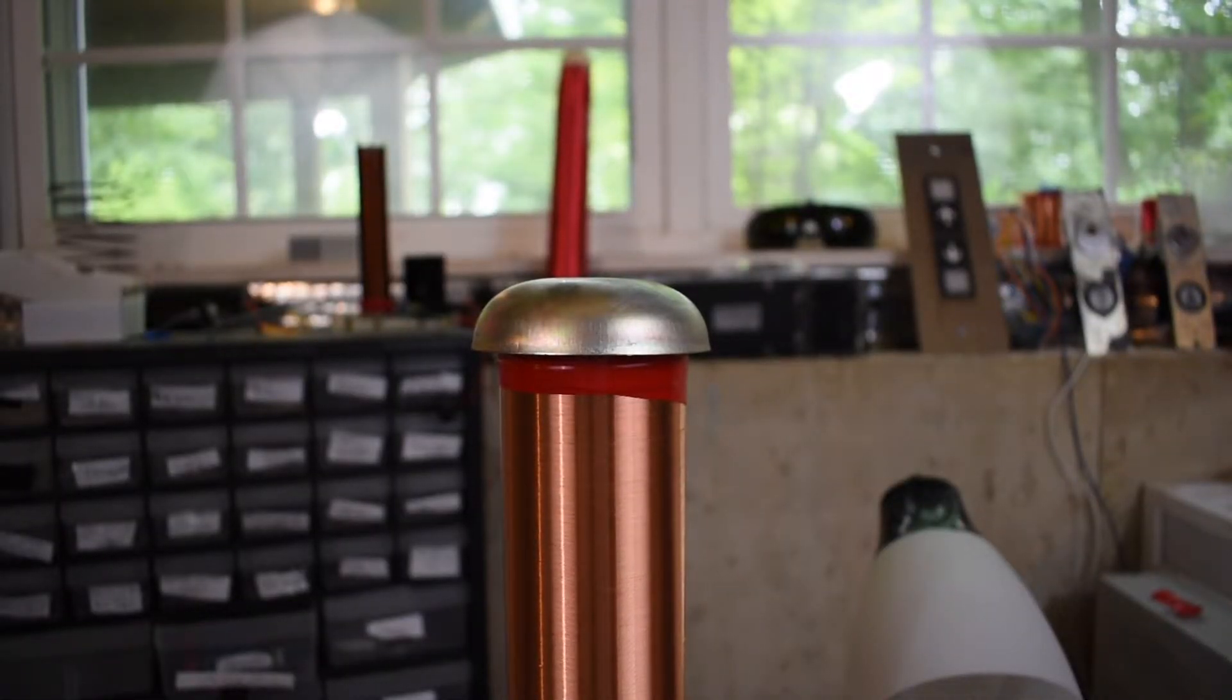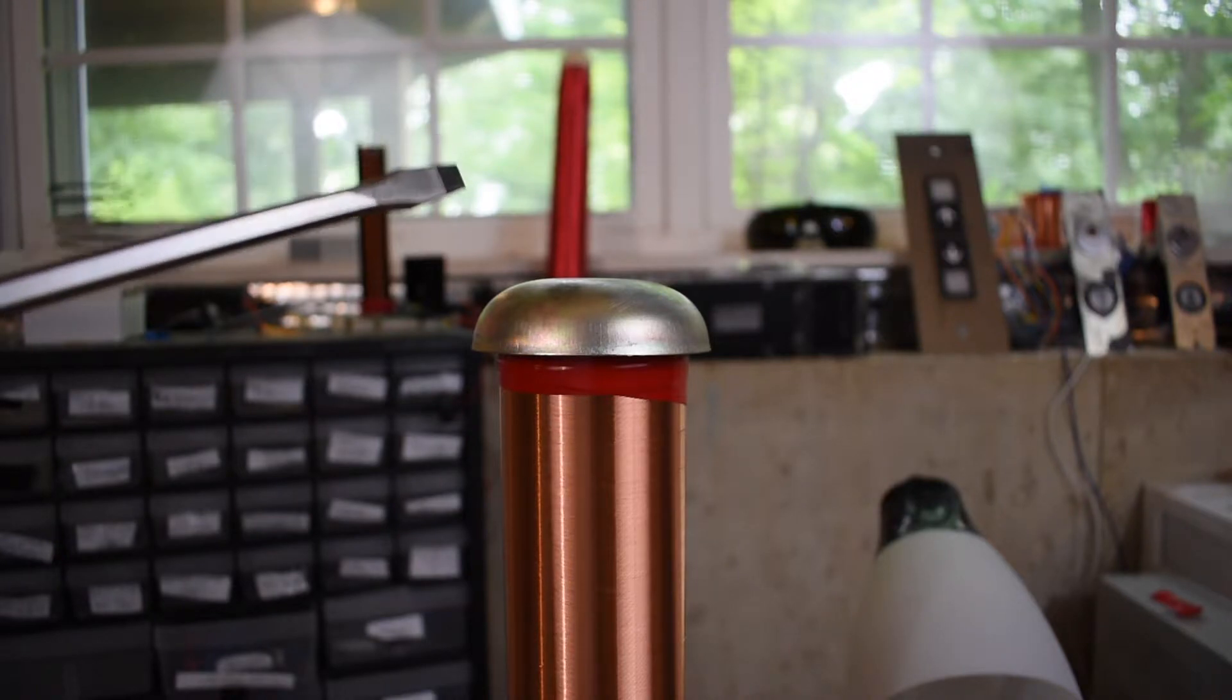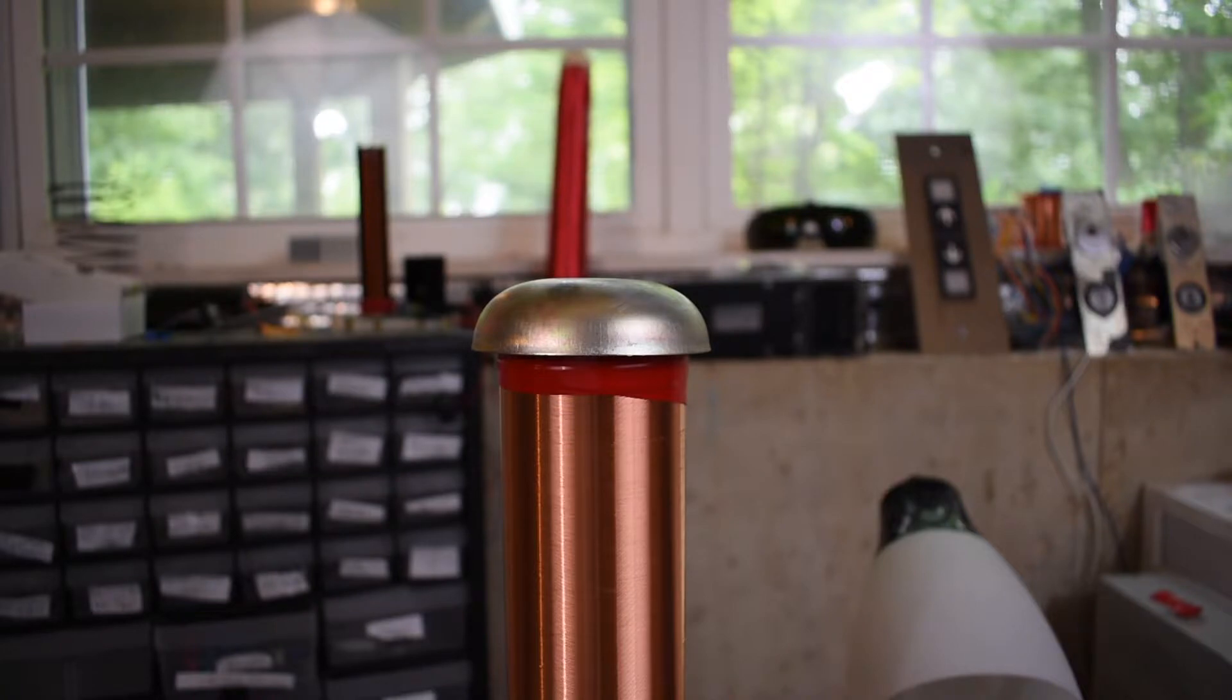Now a good thing to have on your Tesla coil is a top load. My top load is actually just a piece from a bell, an elevator bell that I got a while back. Now what the top load does is it increases the capacitance on your secondary coil side and will allow the voltage to build up rather than just bleed out of the wire and it will actually radiate more energy rather than just having an arc come out of the top.